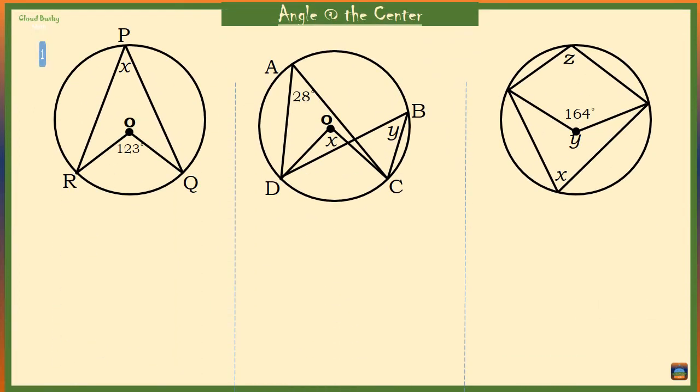Let's look at our first example. At the center of the circle we have angle ROQ which is 123 degrees, and at the circumference is angle X. Both angles are coming from the chord RQ. Angle X must be half of 123, which is 62.5 degrees.